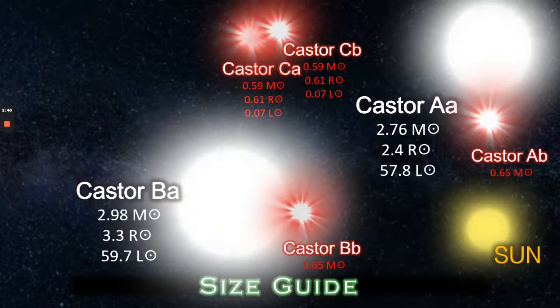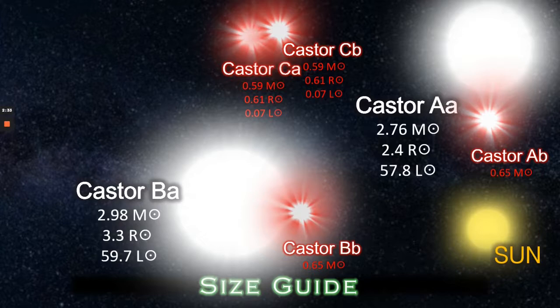Next is Castor BA, which is another A-class star with some 2.98 solar masses and 3.3 solar radii in size. It is the largest of the Castor system and it too also has a smaller companion known as Castor BB. It is quite a complex system isn't it?